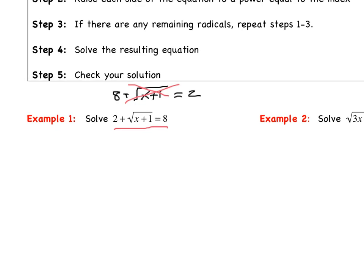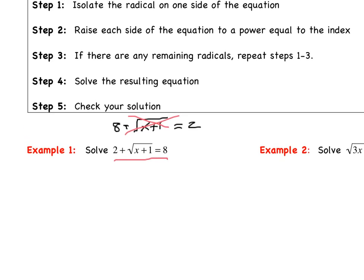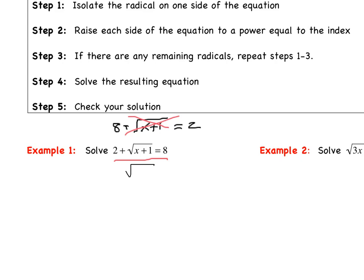The first step in solving these radical equations is to isolate the radical on one side. The square root of x plus 1 is not isolated — we have a 2 with it — so our first step is to subtract 2 from both sides. When we do that, we get the square root of x plus 1 equals 6.